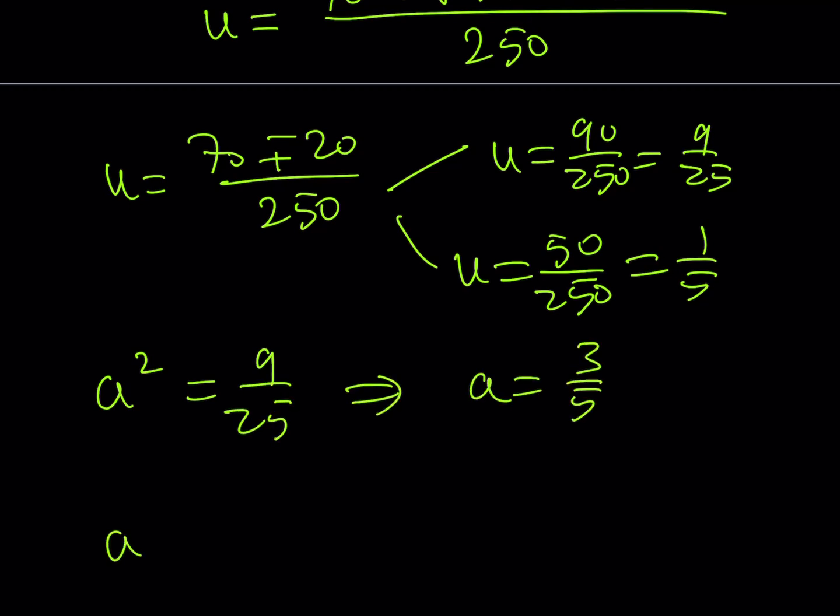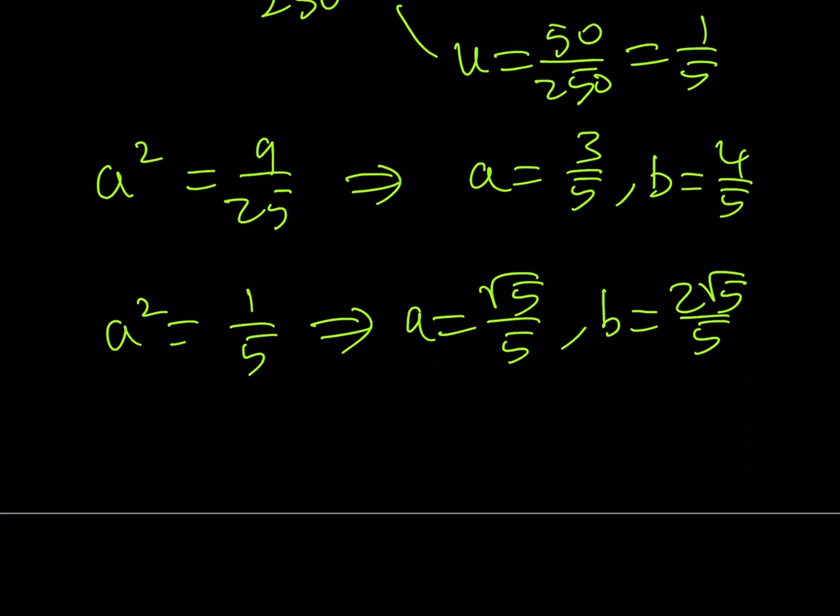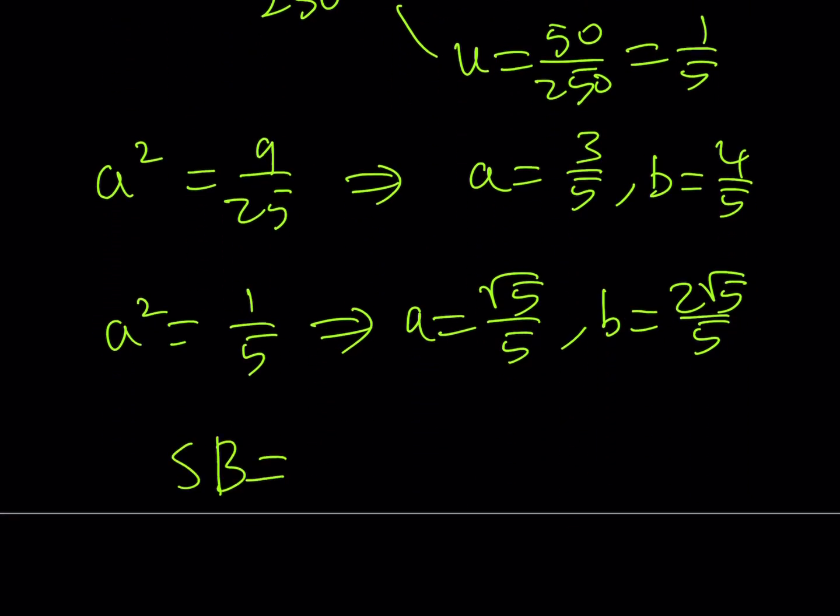And from the second one it can be 1/√5 or you can rationalize it. Since a² + b² = 1, if you do the math you'll get b = 4/5 or b = 2√5/5. We're being asked the value of SB, so SB = a + b. SB can be 7/5 or 3√5/5.